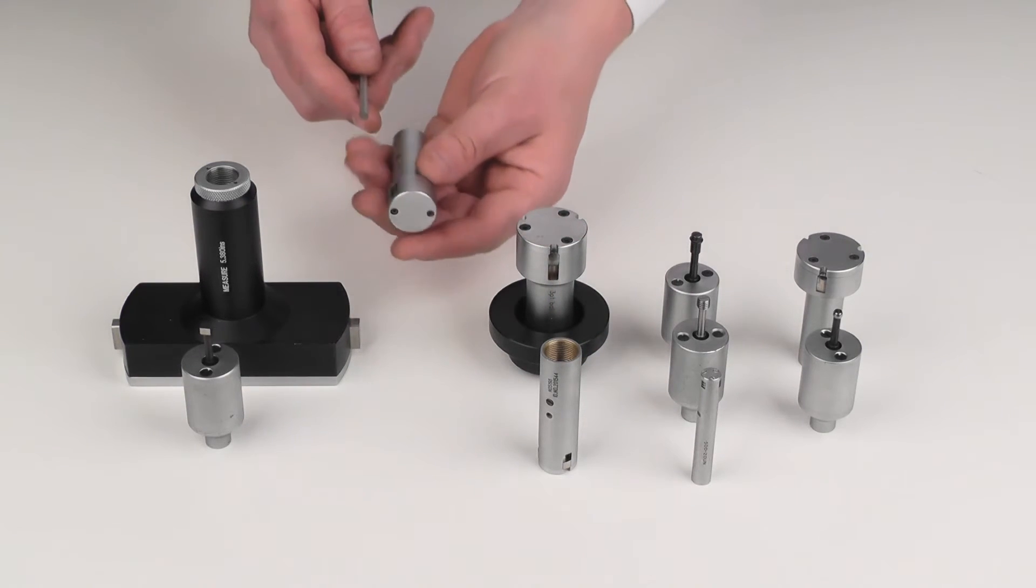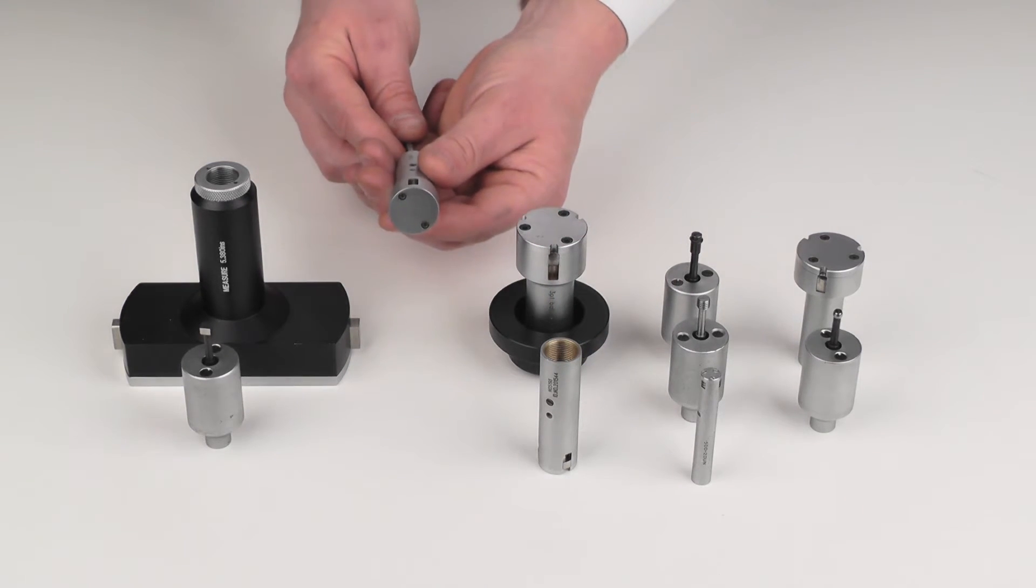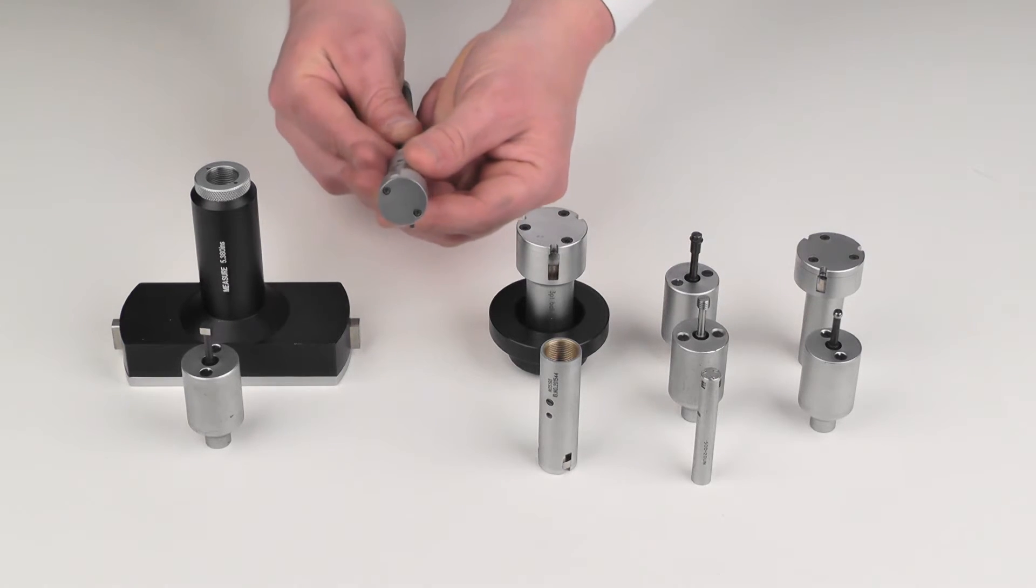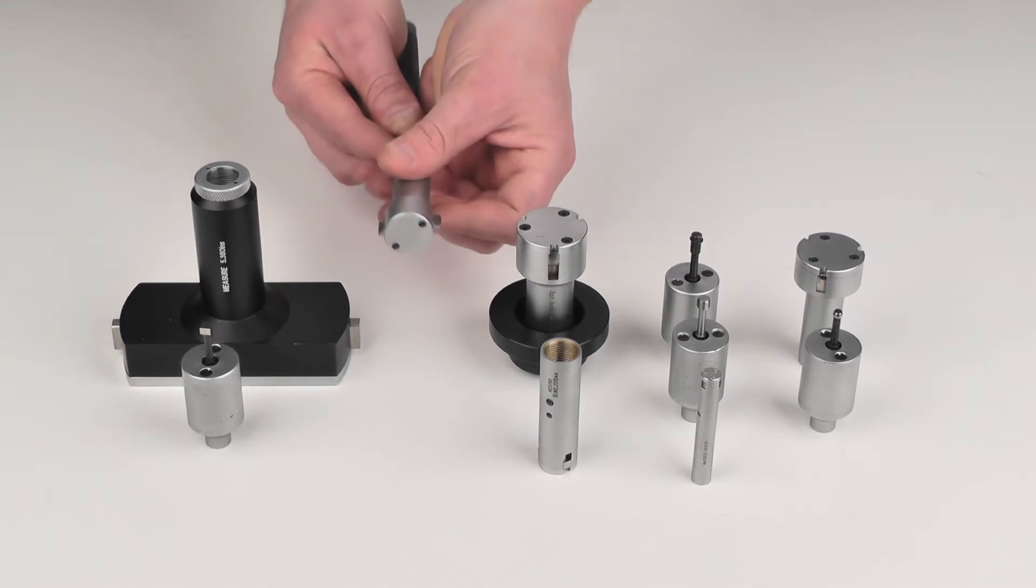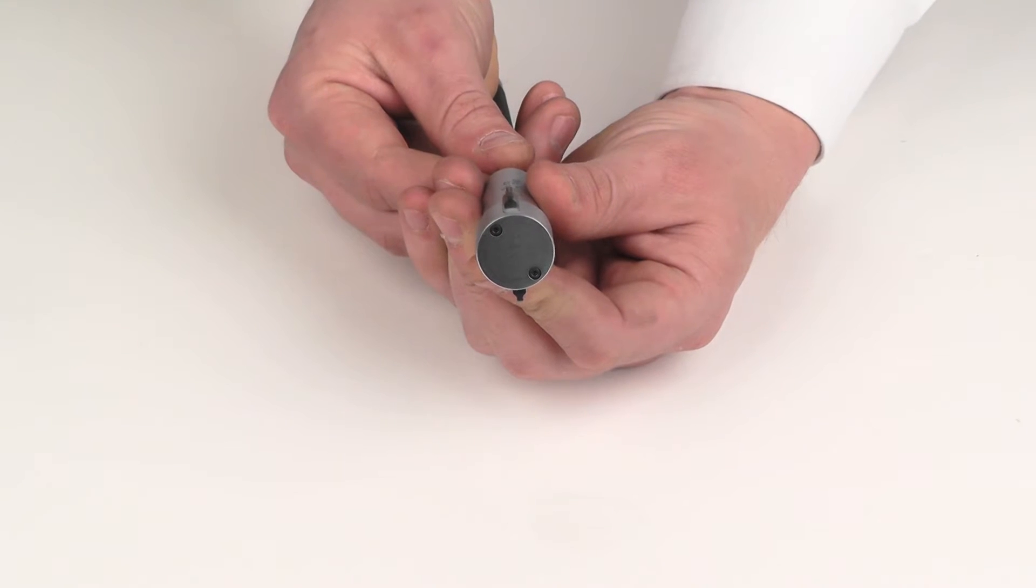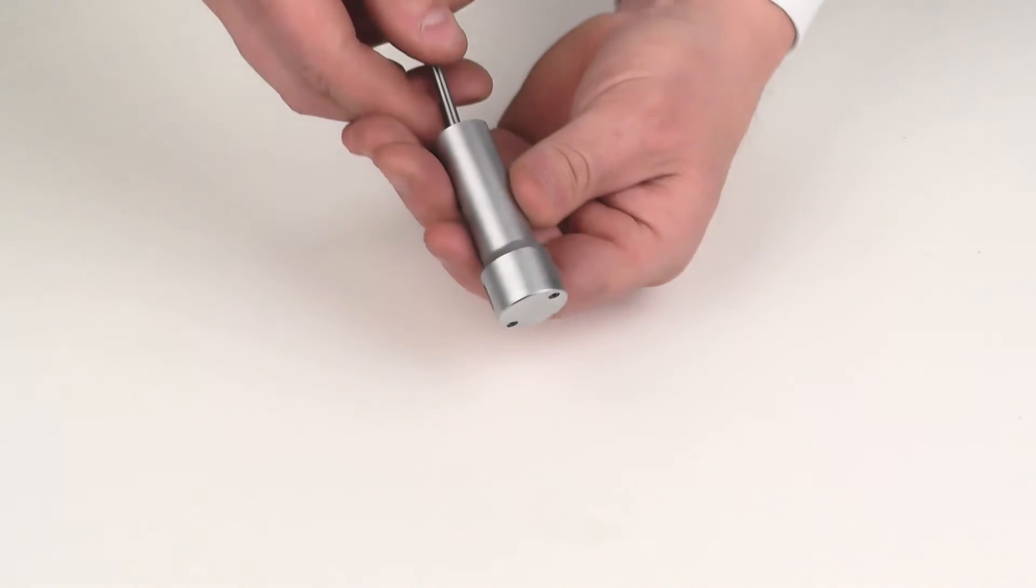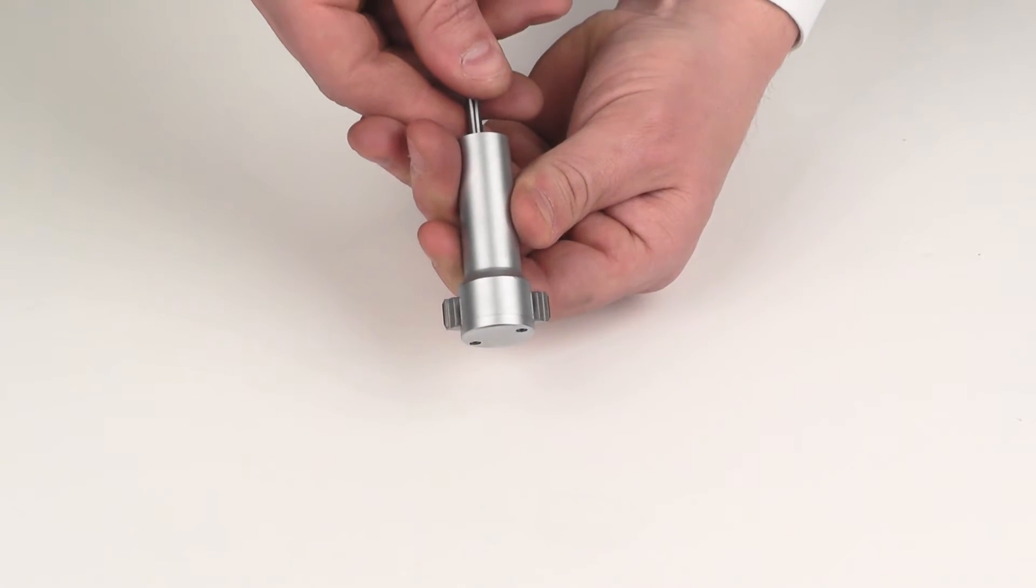For between measurements for drive splines or between pin measurements, we have a two-point system where the pin diameter is actually built right into the anvil. These are one-piece anvils, very tough.